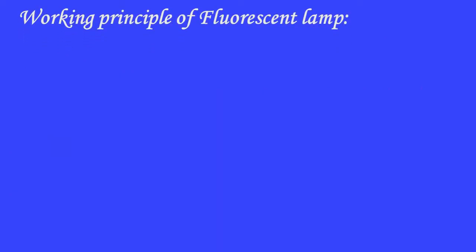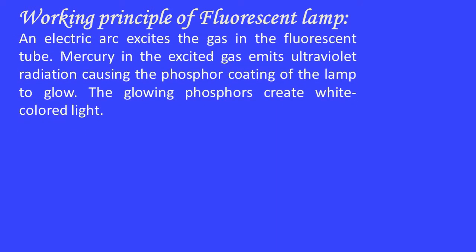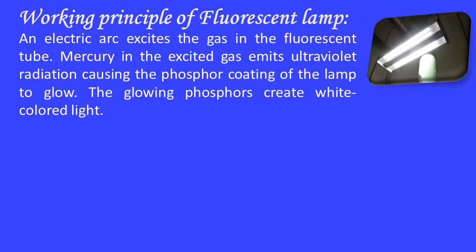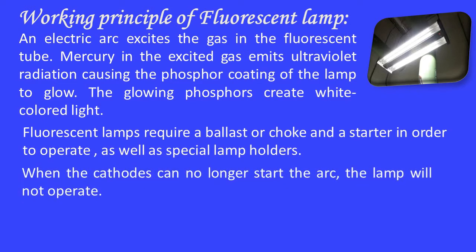An electric arc excites the gas in the fluorescent tube. Mercury in the excited gas emits ultraviolet radiation, causing the phosphorus coating of the lamp to glow. The glowing phosphorus creates white-colored light. Fluorescent lamps require a ballast or choke and a starter in order to operate, as well as special lamp holders. When the cathodes can no longer start the arc, the lamp will not operate.